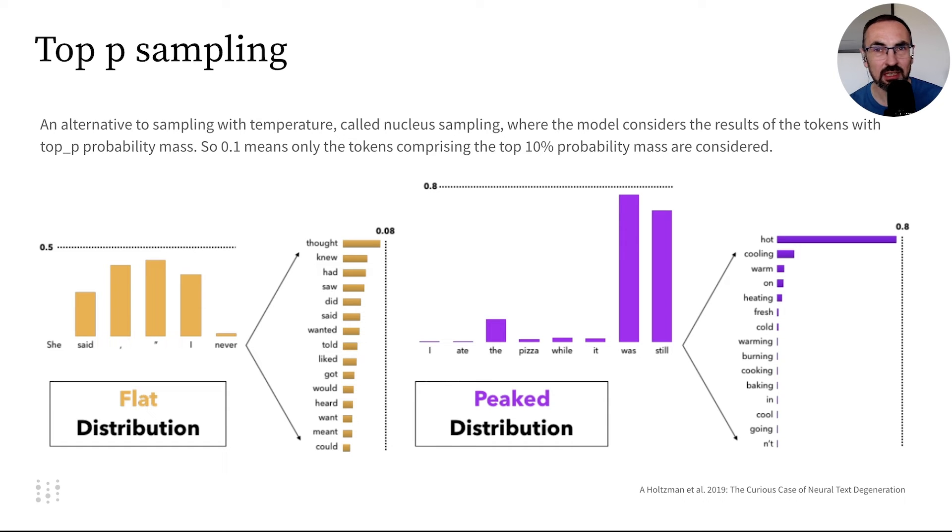Another technique is top-p sampling, proposed by researchers studying BeamSearch and human text. This method cuts off probabilities at a certain threshold, only considering tokens with higher probabilities. It excludes low probability tokens and samples from those with higher chances.